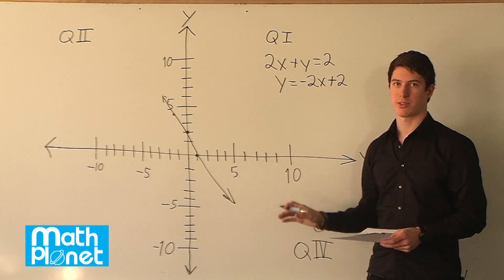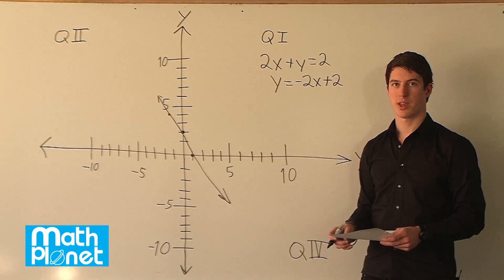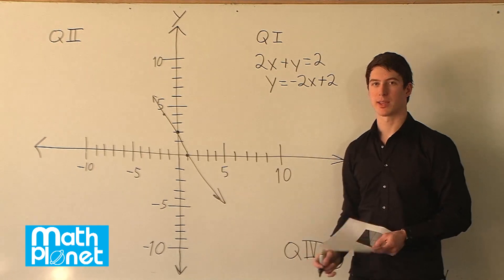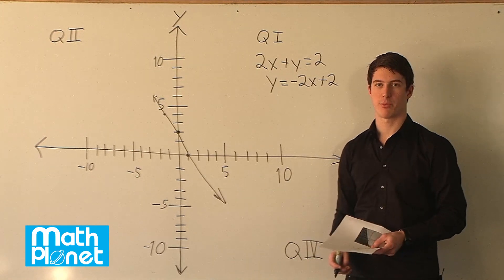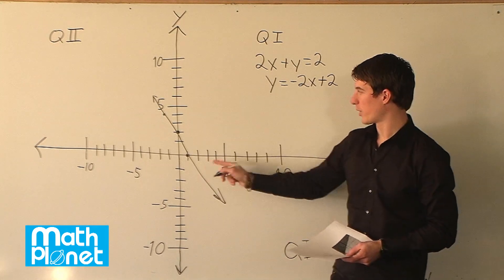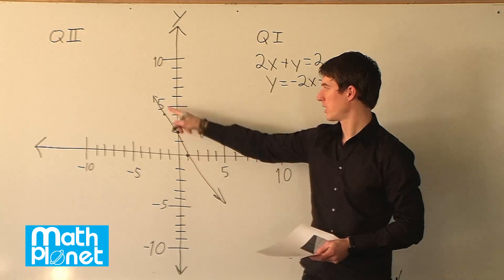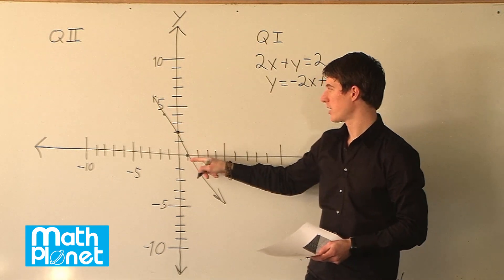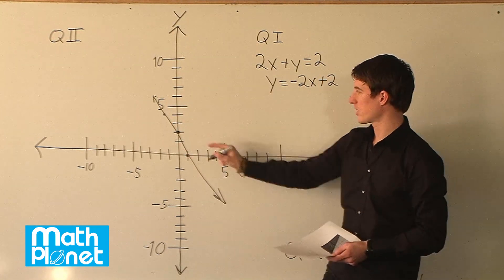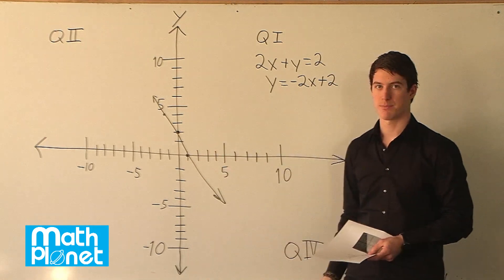We've just plotted this line here, but we want to say: if we have a line already plotted, can we find the slope from that? Of course we can if we have some points. We have some points here already — if not, we can sort of guesstimate and go from there. In this case we have a couple of points clearly marked.